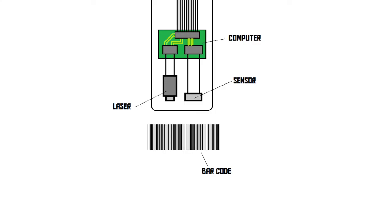Now let's see how barcodes are actually read by a scanner. The most popular way to read a barcode is using a laser scanner. The idea is simple: we have a laser that moves over the barcode horizontally, and we also have a light sensor positioned right next to the laser that measures the intensity of the light reflected back. When the laser beam hits a black bar or a black line, very little light is reflected back to the sensor.